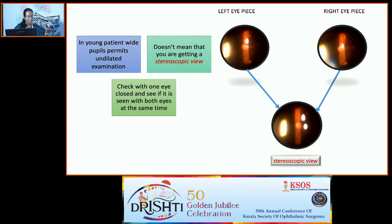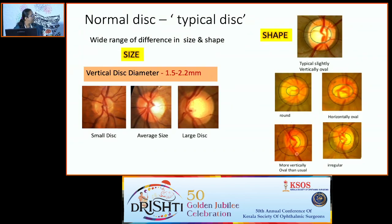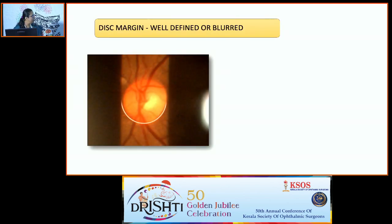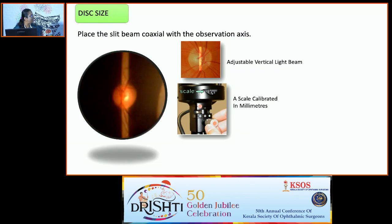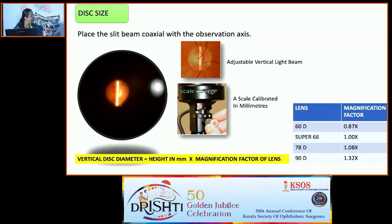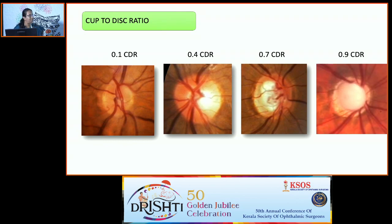In young patients, an undilated examination is possible, but ensure stereopsis by viewing with both eyes. Look for the disc margin, neuroretinal rim, cup, vertical disc diameter, vertical cup size, and disc vessels. Disc size has a wide normal range from small to large; shape is usually vertically oval. Look at whether the disc margin is well defined or blurred, as in papilledema. Disc size is measured using a vertical beam with a scale calibrator; consider magnification factors — 66D gives a factor of 1.0, closest to 78D.